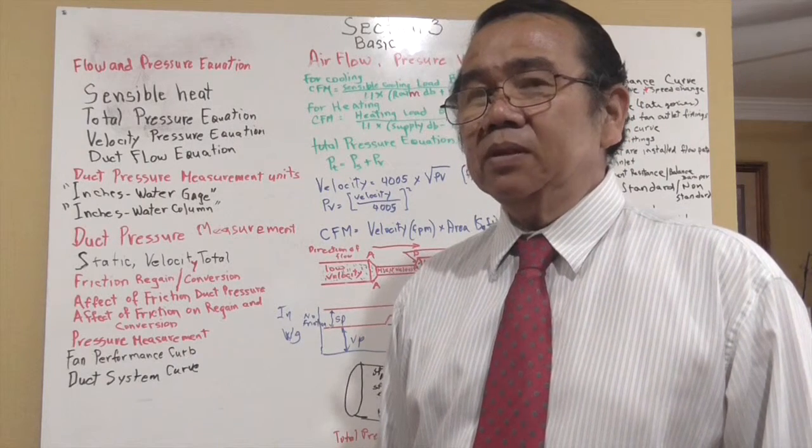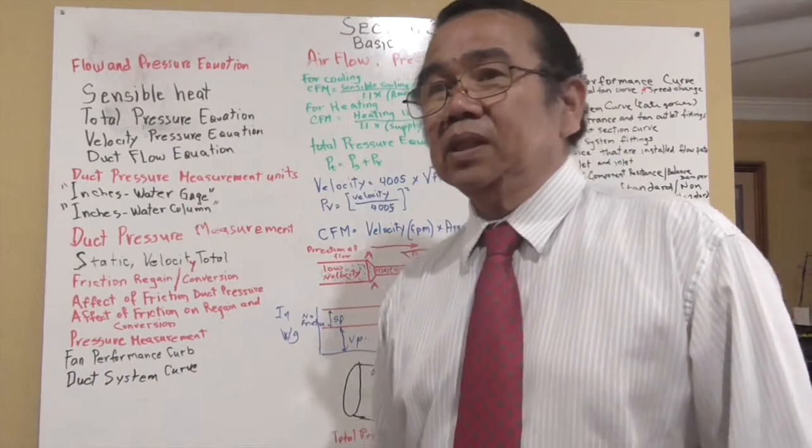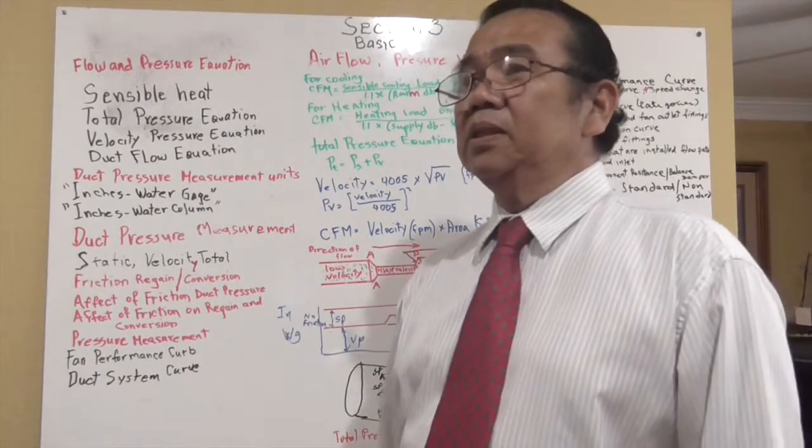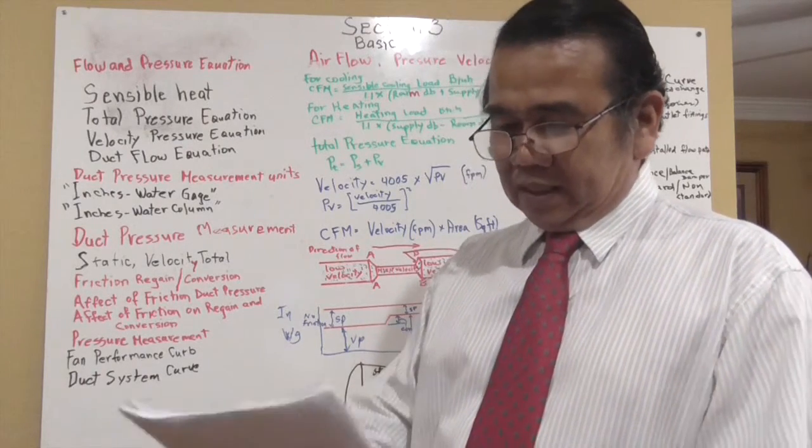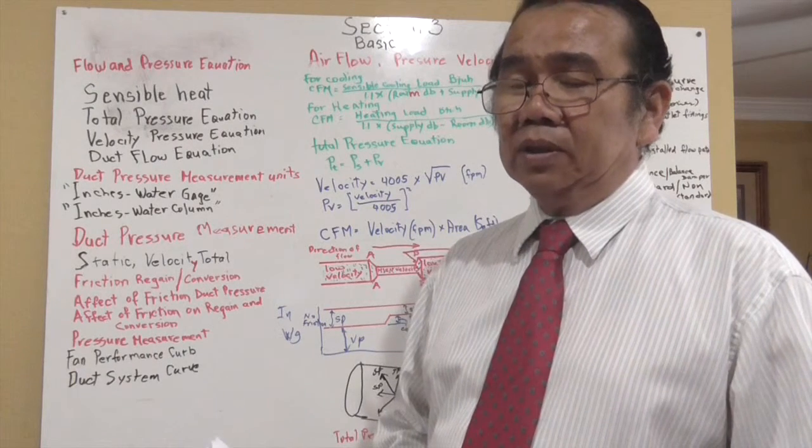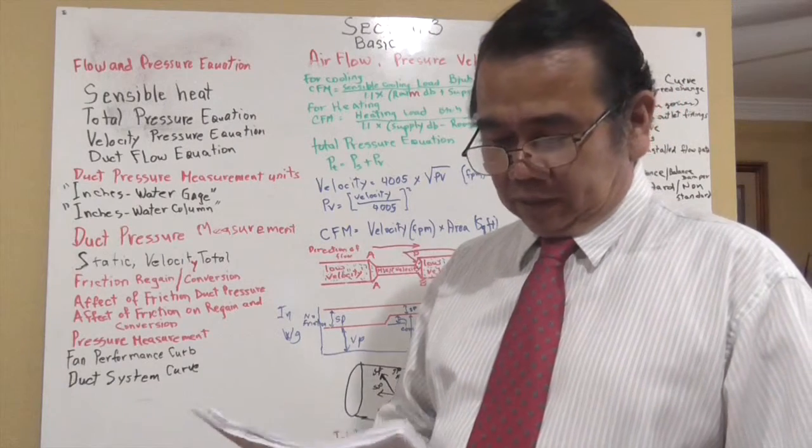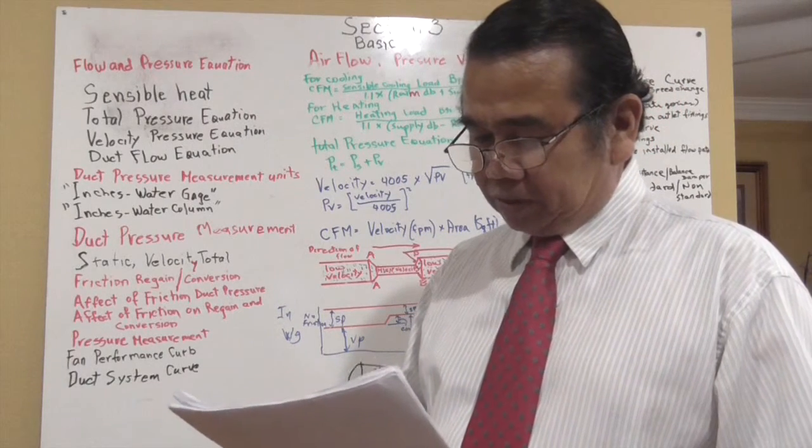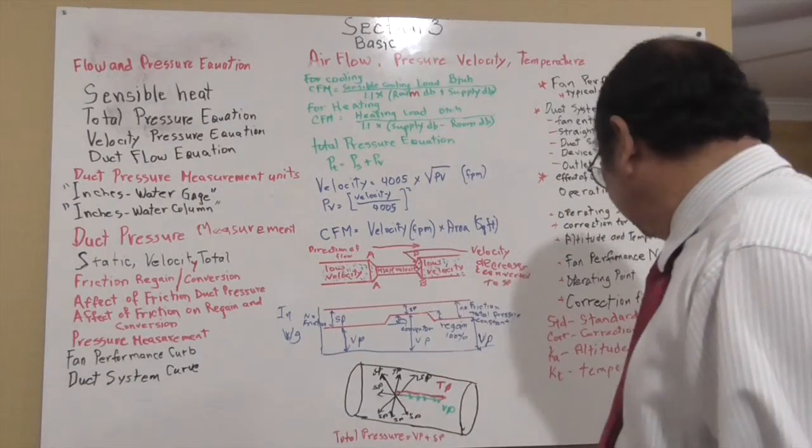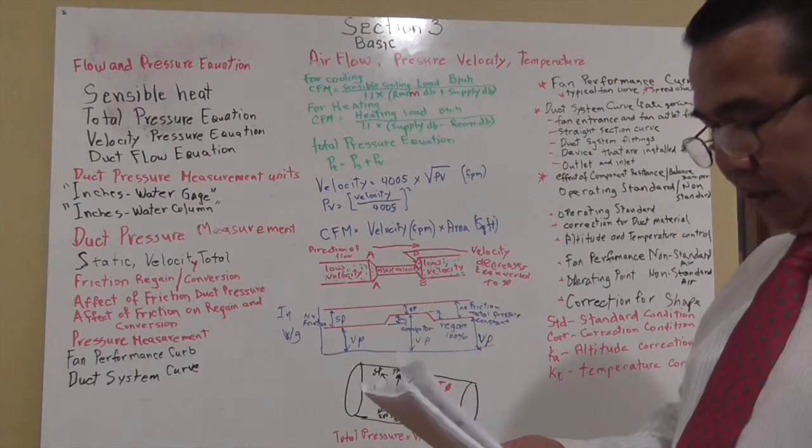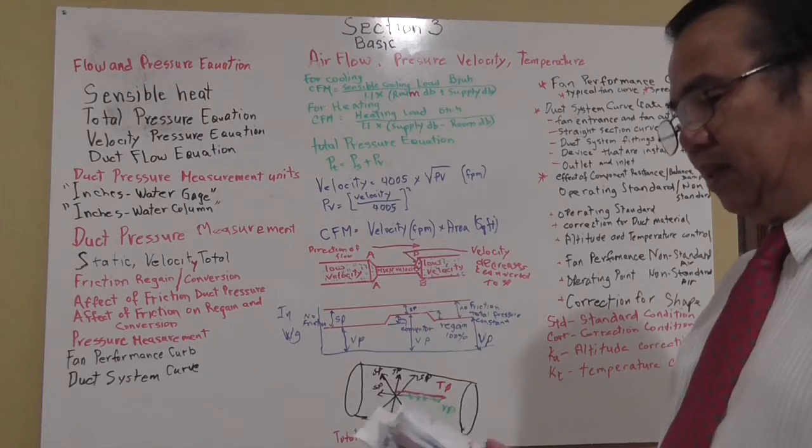If the CFM is not right, sometimes the system will be starving for air even though you see the fan turning, but it's not the right RPM. Try to learn that performance curve of the fan—that's very important. Pressure correction equals pressure standard times KA plus KT.